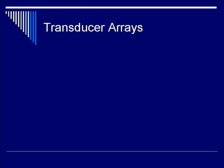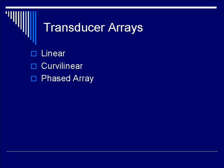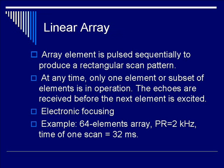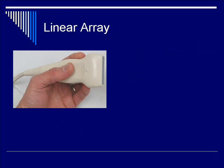So far we've been talking about single element focused or non-focused transducers. Let's move on to transducer arrays, which could be linear, curvilinear, phased array, or mechanical. A linear array consists of multiple transducer elements that are pulsed sequentially to produce a rectangular scan pattern. At any one time, only one element or subset of elements is in operation. The echoes are received before the next element is excited. Focusing is done electronically. An example is a 64-element array with a pulse repetition rate of 2 kHz.